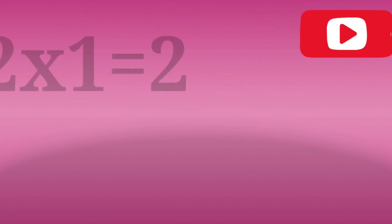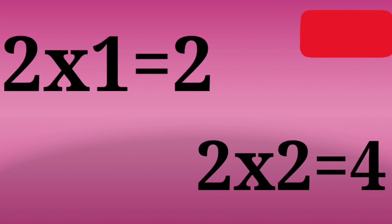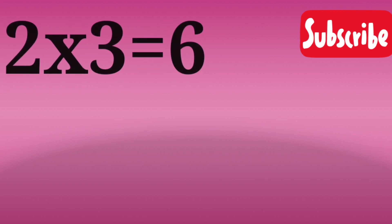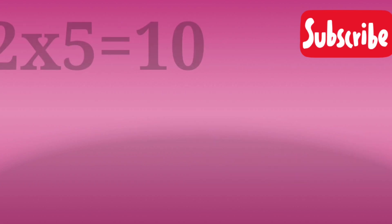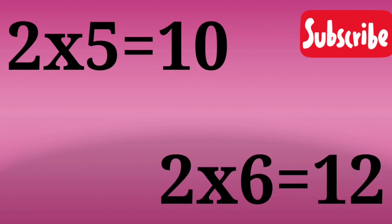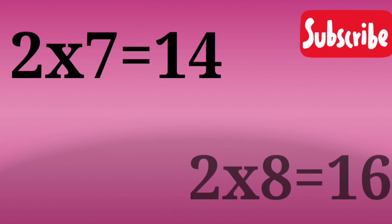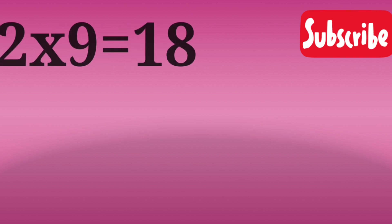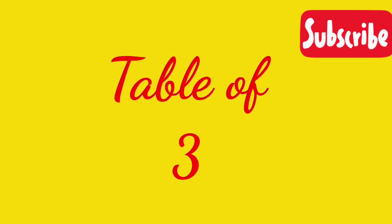2 1's are 2, 2 2's are 4, 2 3's are 6, 2 4's are 8, 2 5's are 10, 2 6's are 12, 2 7's are 14, 2 8's are 16, 2 9's are 18, 2 10's are 20. Table of 3.